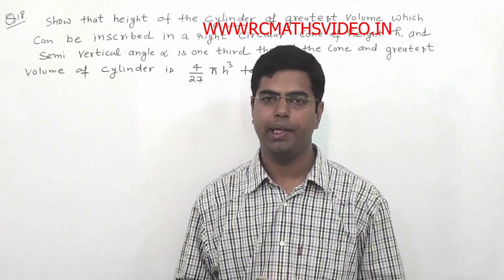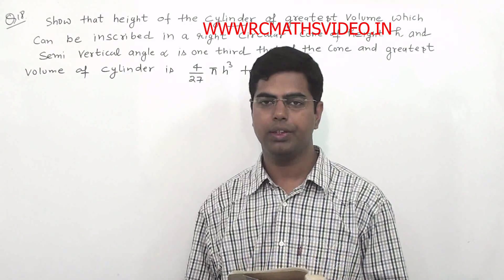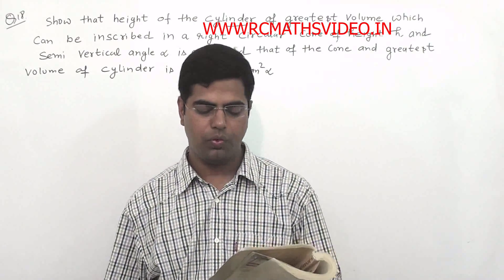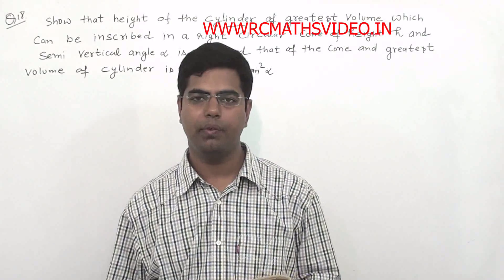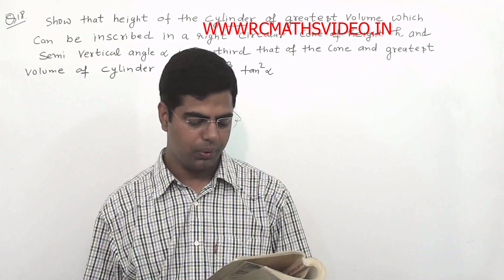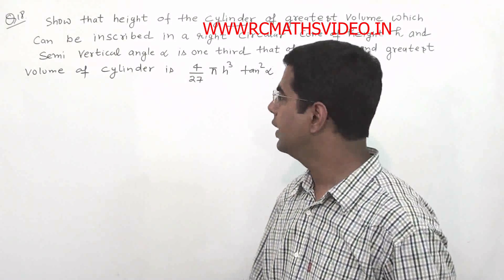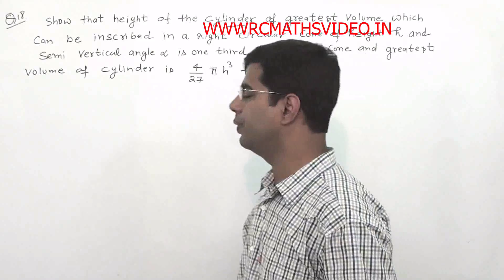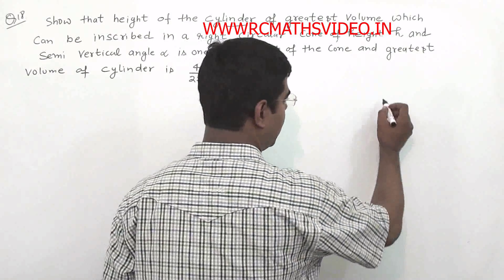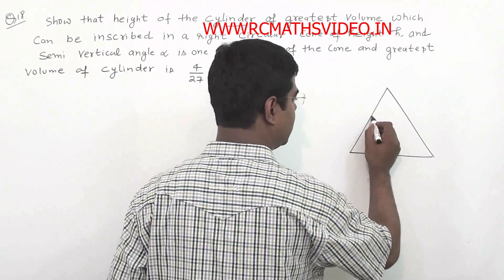Question number 18: Show that the height of the cylinder of greatest volume which can be inscribed in a right circular cone of height h and semi-vertical angle alpha is one third that of the cone, and the greatest volume of the cylinder is (4/27) π h³ tan²(alpha). So the situation is that we have a cone with a cylinder inscribed in it.